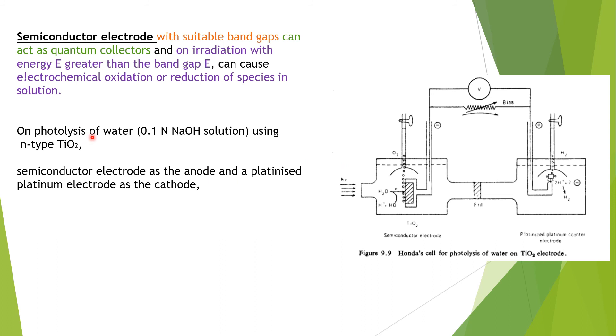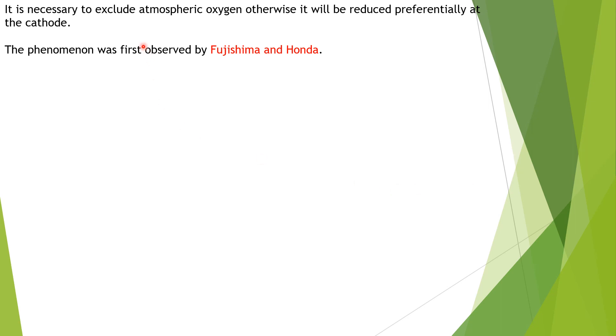The same things are discussed here. On photolysis of water with 0.1 normal NaOH solution, using N-type titanium dioxide semiconductor electrode as the anode and platinized platinum as the cathode, oxygen is evolved at the titanium dioxide surface, while in dark, H2 is evolved. For irradiation is needed, the semiconductor electrode will be in the presence of light. This process occurs in dark where the generation of H2 is occurring. It is necessary to exclude atmospheric oxygen, otherwise it will be reduced preferentially at the cathode.